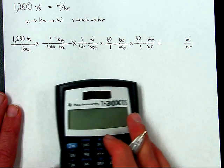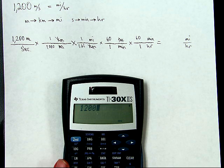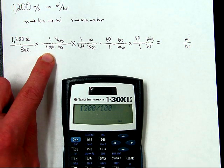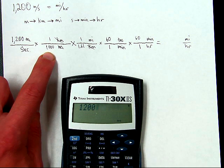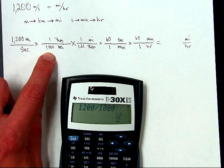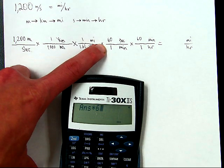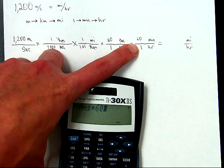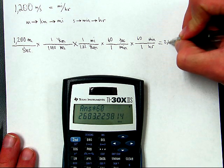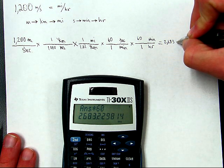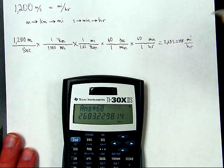So let's have a look at this. 1,200 meters per second divided by 1,000, divided by 1.61 times 60 times 60 gives that for the final answer. So let's just write down the raw number first: 2,683.2298 miles an hour.